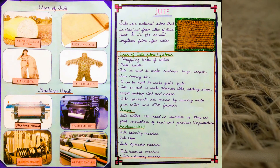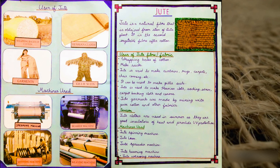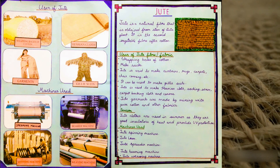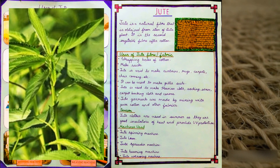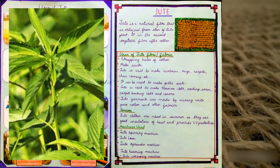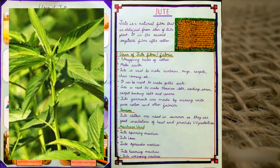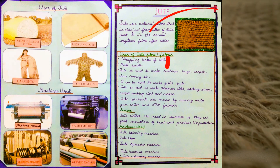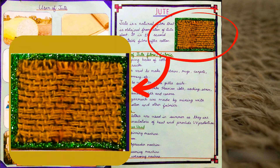Jute is a natural fibre that is obtained from the stem of the jute plant. It is the second vegetable fibre after cotton. This is the sample of jute fabric.